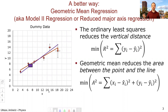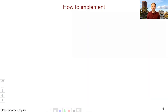We sum those areas up and minimize that quantity — the sum of all these different areas which includes information about both x and y. This is the fundamental difference between the geometric mean regression and the least squares: least squares only minimizes the vertical distance, while the geometric mean regression minimizes the area between the point and the line, looking at both x and y. It turns out we can implement the geometric mean regression through a series of least squares regressions, which is convenient because Google Sheets and Excel don't have a geometric mean regression function built in.